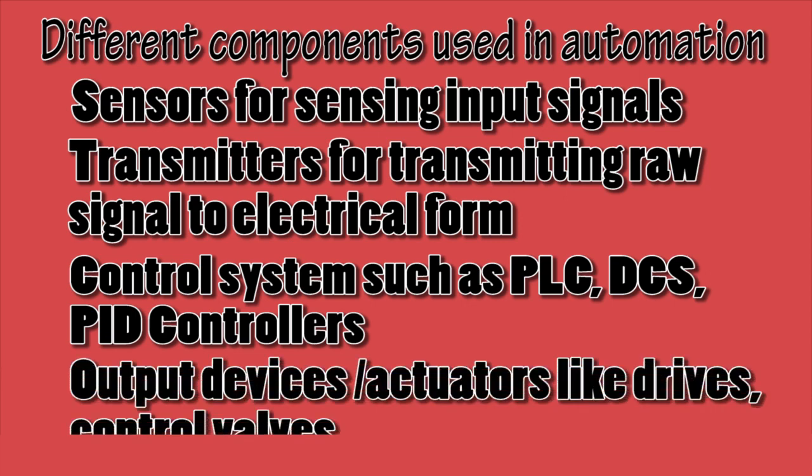The control system then activates the required output as per the logic inside it. The next component of automation is output devices or actuators like drives, control valves, solenoid valves, motors, etc. All components of the automation system must be in perfectly healthy condition so that the automation system can work properly.